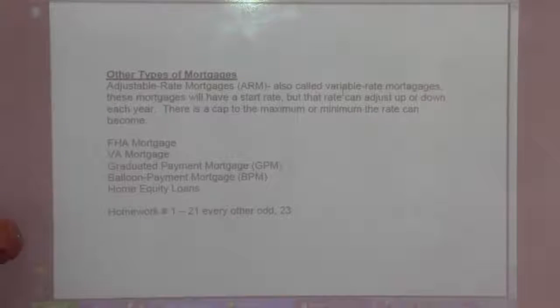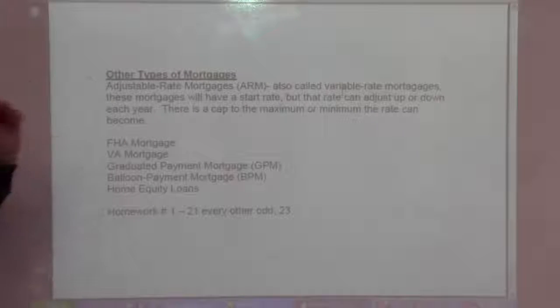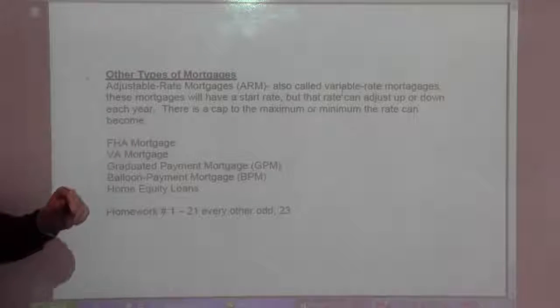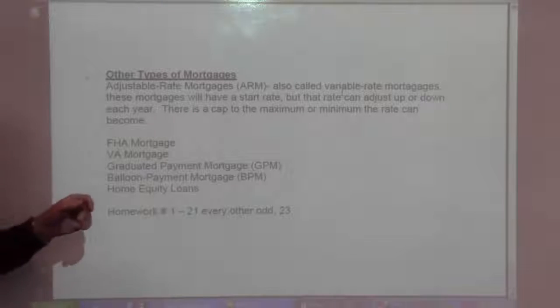Adjustable rate mortgages are also called variable rate mortgages. These mortgages have a start rate but their rate can adjust up or down each year. There's a cap to the maximum or minimum the rate can become.